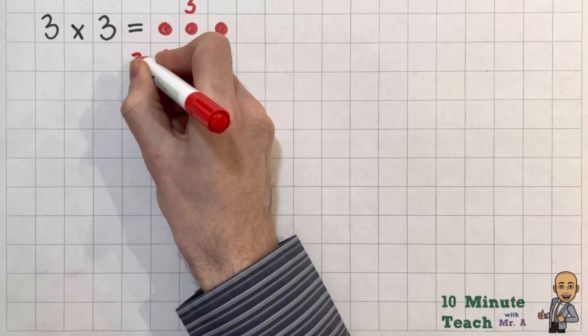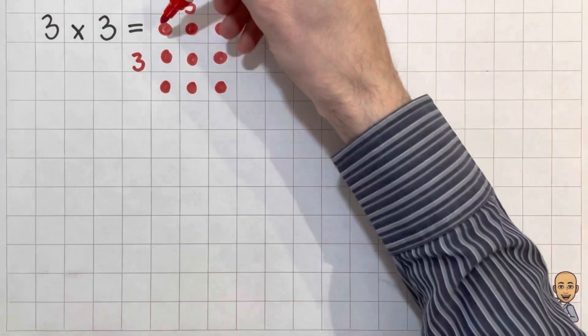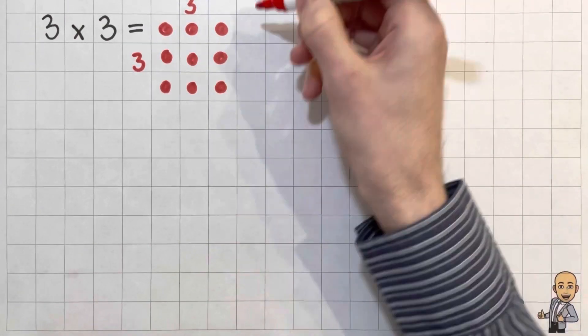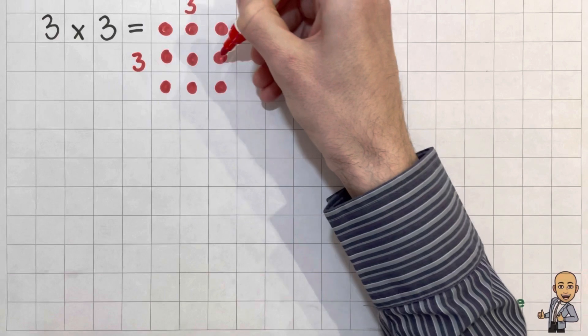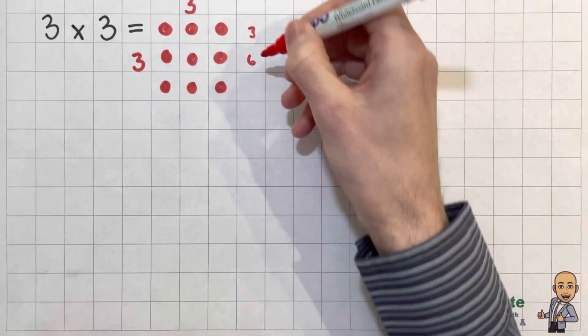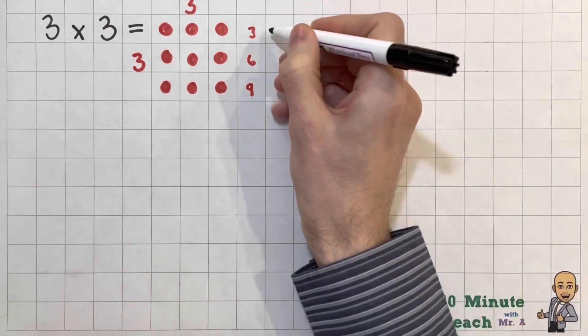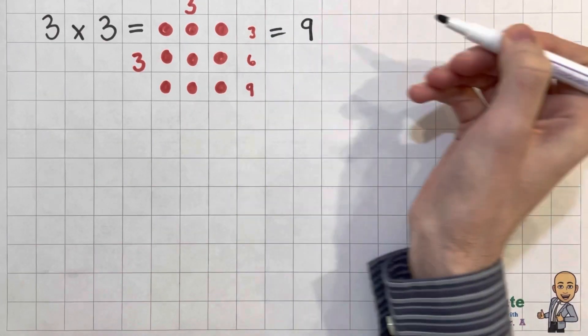And what's really interesting with that is that you can see the answer in your array. So it's 1, 2, 3, there's 1 lot of 3. 4, 5, 6, there's 2 lots of 3. 7, 8, 9 for the answer of 9.